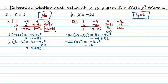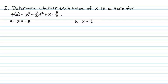Alright, let's move on to the next slide. Alright, so here's our problem. Determine whether each value of x is a zero for f of x equals x cubed minus 7 halves x squared plus x minus 3 halves.